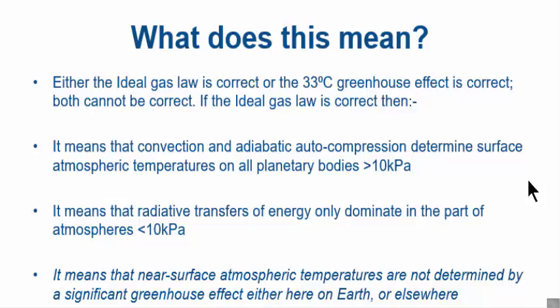In astronomy, we call this a Kelvin-Helmholtz contraction—that's how stars form. You know, when a large amount of gas compresses due to gravity in space, it goes up to millions of degrees. It only goes to 33 degrees on Earth because there's just a tiny amount of gas involved. But you always get the auto-compression anywhere over 10 kPa, anywhere.